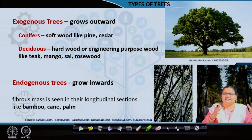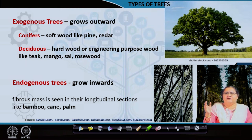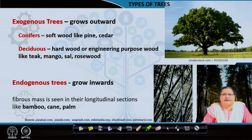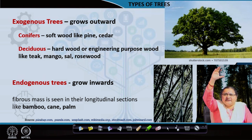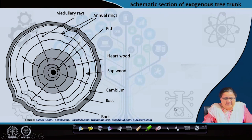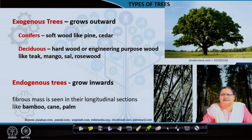Exogenous trees grow year after year, showing different shades within them. Those are called the annual rings, which are not as clearly seen in the case of coniferous trees. Endogenous trees have annual rings in the vertical direction, so at particular time intervals they have segments grown together. You can see the bamboo tree in the picture showing segments growing at a certain period of time.